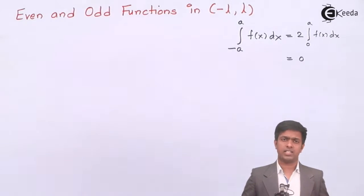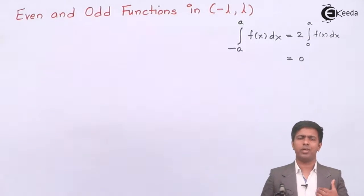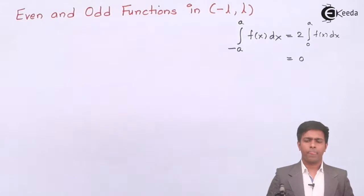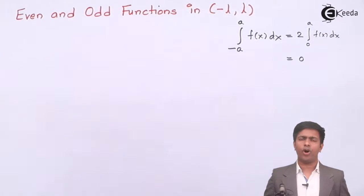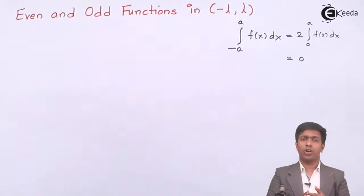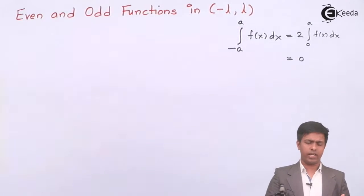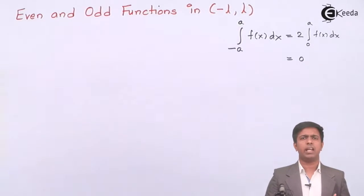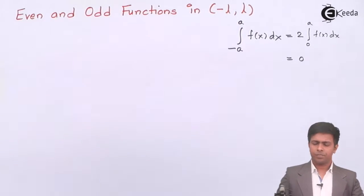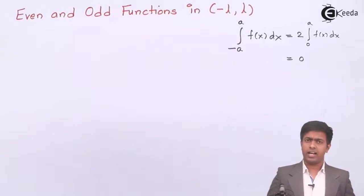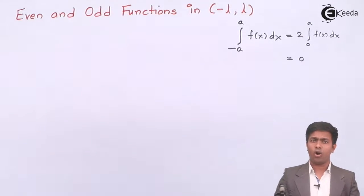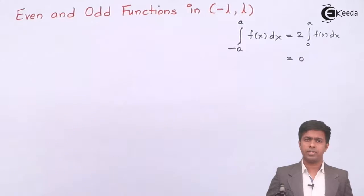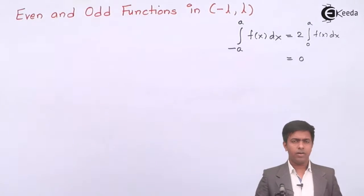Identifying even or odd minimizes your work. If the given function is neither even nor odd, then you have no option - you have to find a naught, aₙ, and bₙ to get the Fourier series. Now let's see what happens if the given function is even or odd and how we can get the answer in minimum steps.